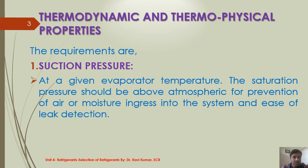This is required because if any leakage takes place from the system to the surroundings, the refrigerant leaks out from the system, which is easier to handle than the reverse case. If the system is operating under vacuum, moisture from outside leaks into the system, which is difficult to handle because complete overhauling of the system is needed to remove air or moisture. Also, detection of leaks is difficult under vacuum. So as far as possible, the refrigerant should have a positive pressure at evaporator temperature.